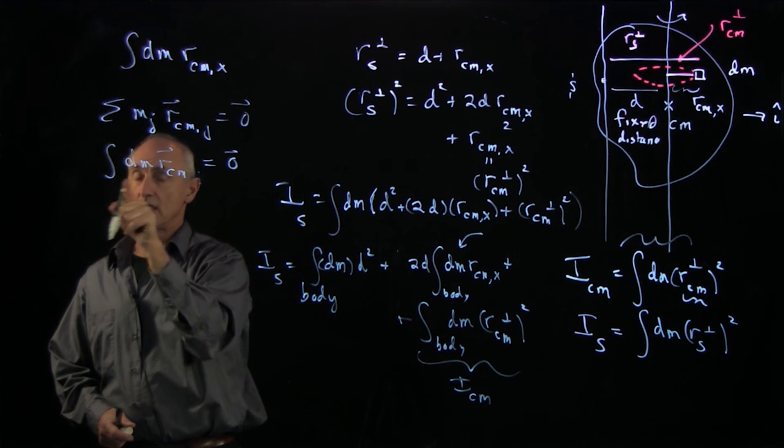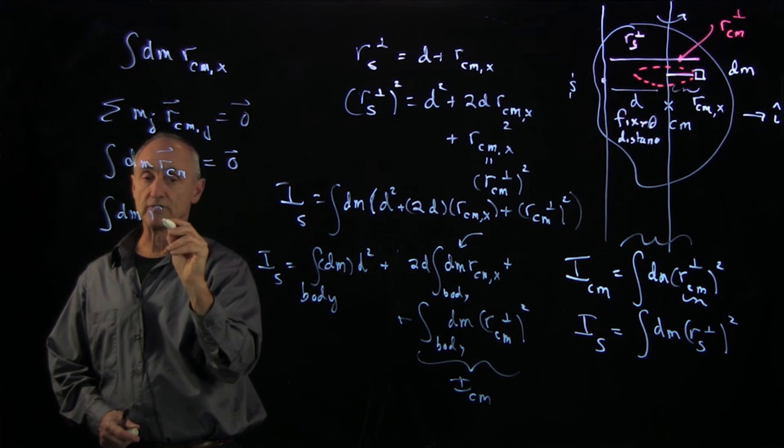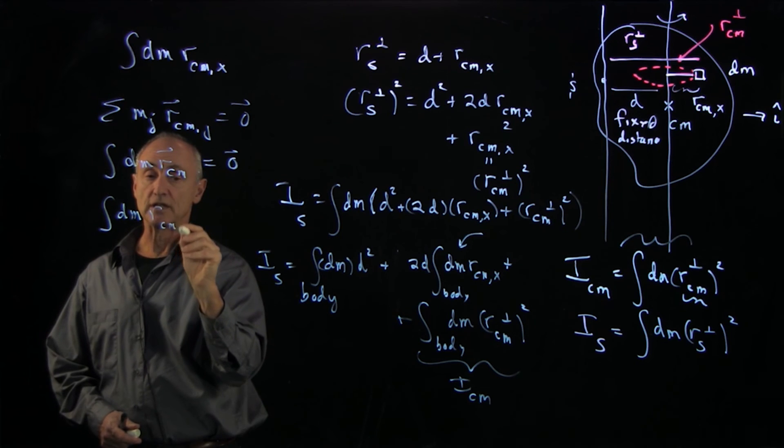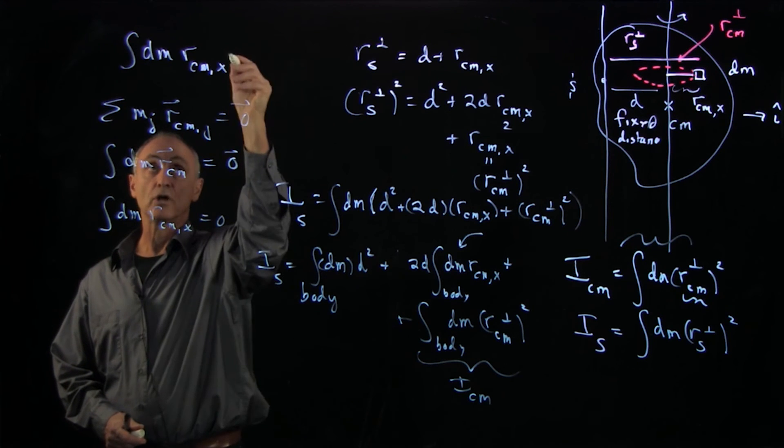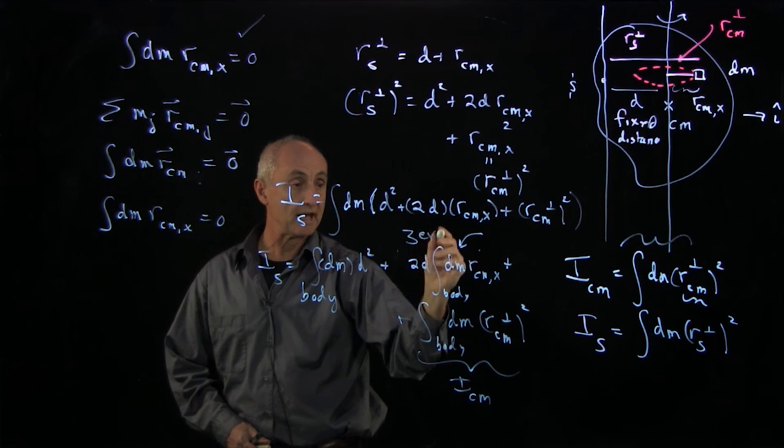What does this say in terms of components? In terms of components, each component separately vanishes. So we have the condition that cm x is 0. So that term is 0, which is precisely this term. That's 0.